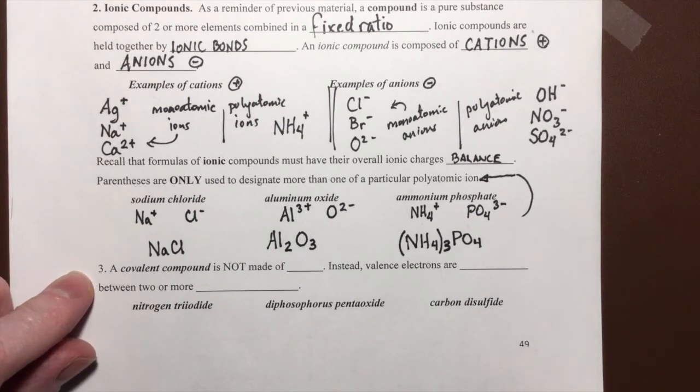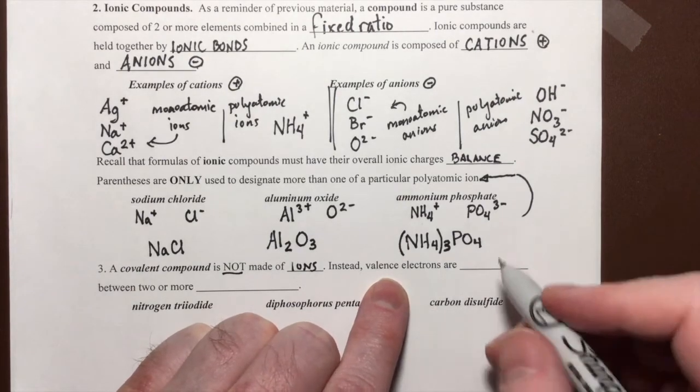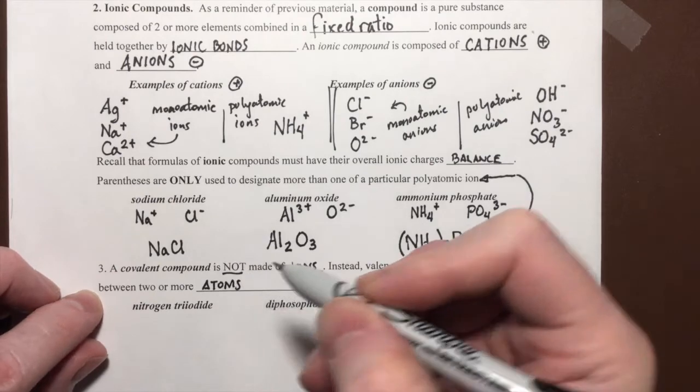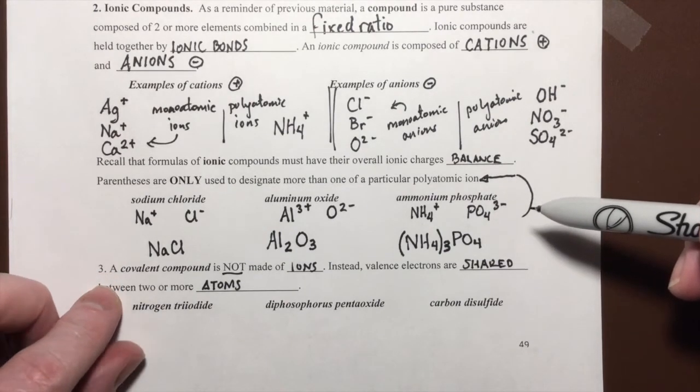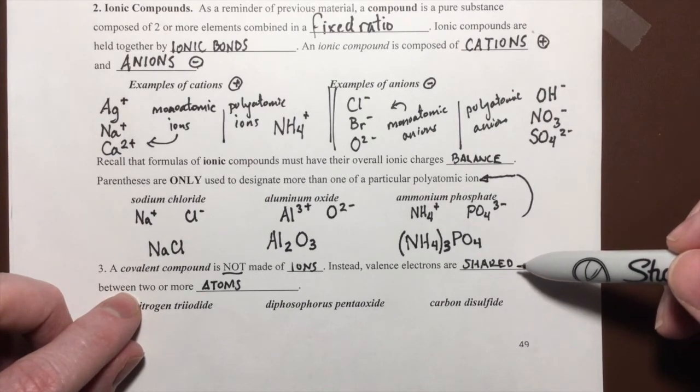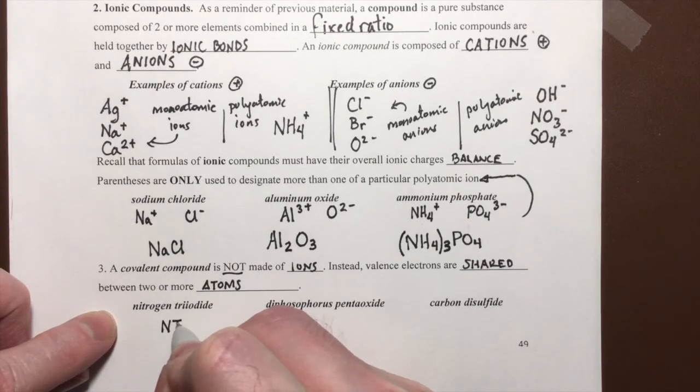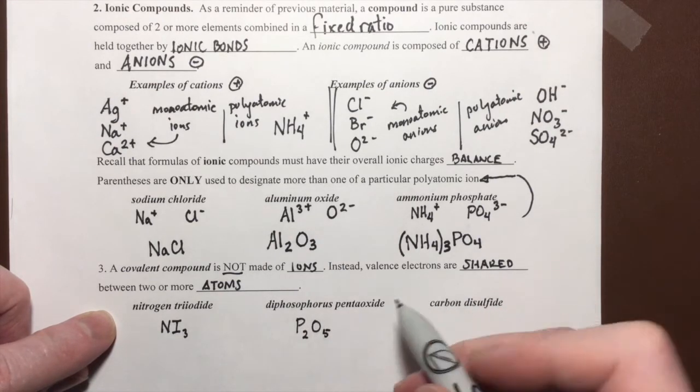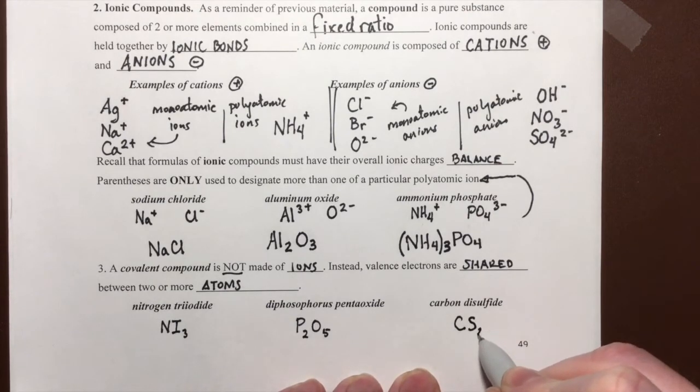We're going to just take a moment here and talk about covalent compounds. Covalent compounds are fairly simple. They are not made of ions. Instead, their outermost shell of electrons, which we call the valence electrons, are shared between two or more atoms. So, instead of being an electrostatic attraction between charged ions that are attracting each other, a covalent compound is held together by mutually sharing electrons between its atoms. Very quickly, here are some examples. Nitrogen triiodide, diphosphorus pentaoxide, also called pentoxide. That A is optional there. And carbon disulfide.